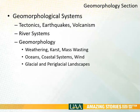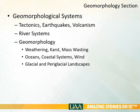In this whole next section of the course, we are going to shift away from the atmosphere to so-called geomorphological systems. This will include a little bit of discussion of geology first off, and then we'll talk about weathering, karst, and mass wasting, then river systems, oceans and coastal systems, and finally glacial and periglacial landscapes — a lot of which have relevance to our regular, everyday Alaska life.